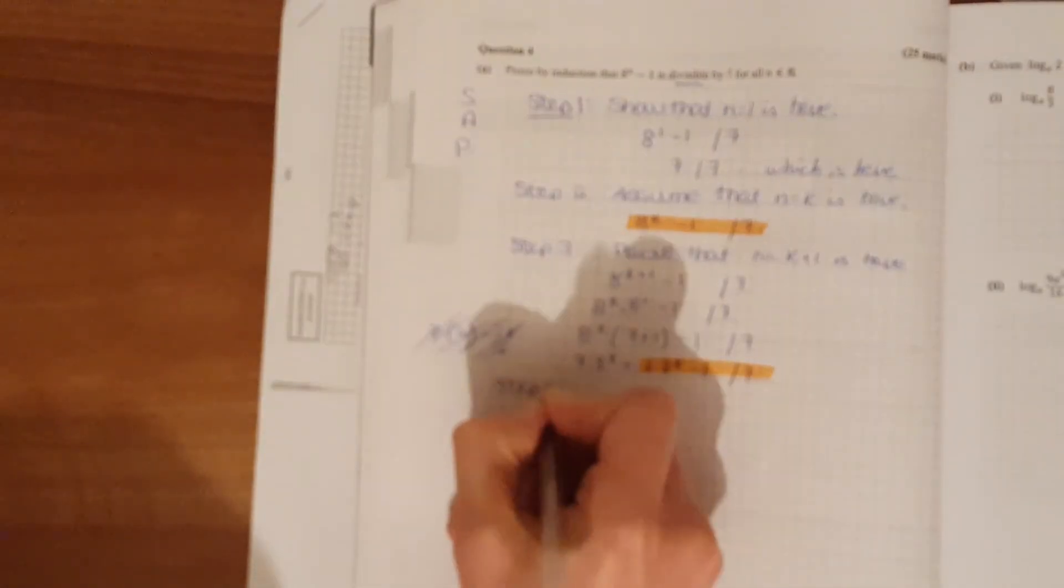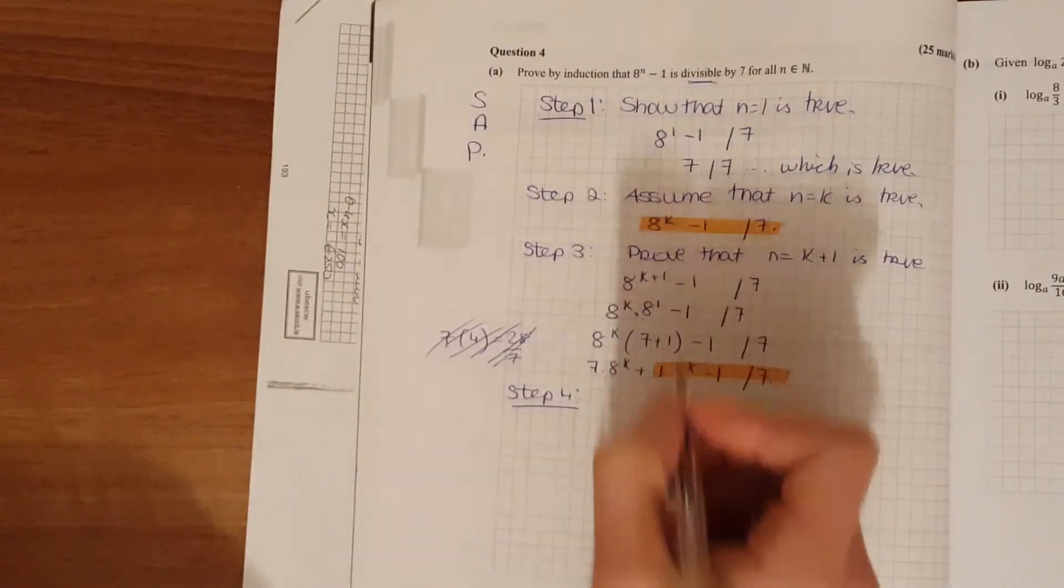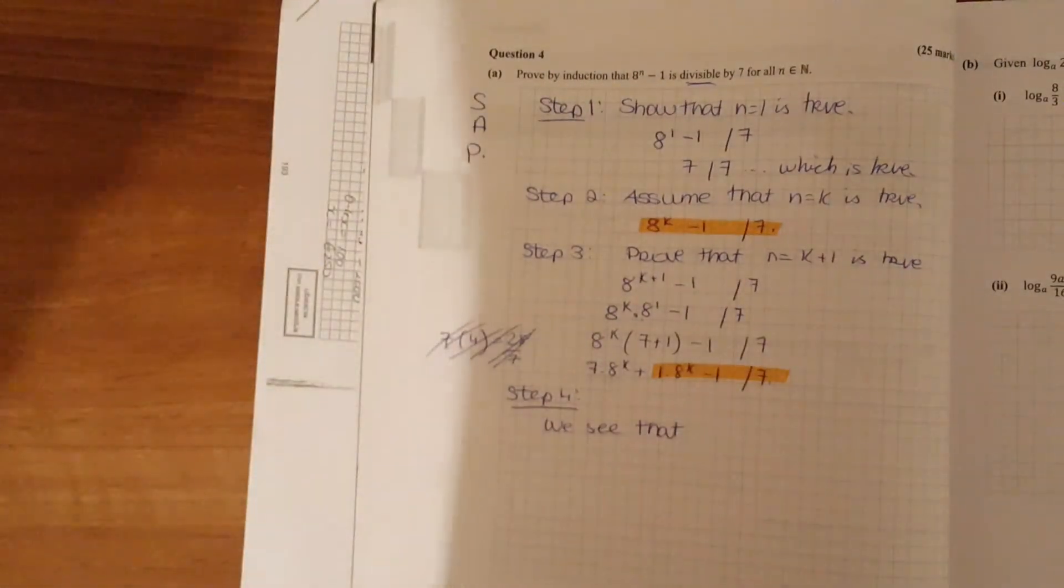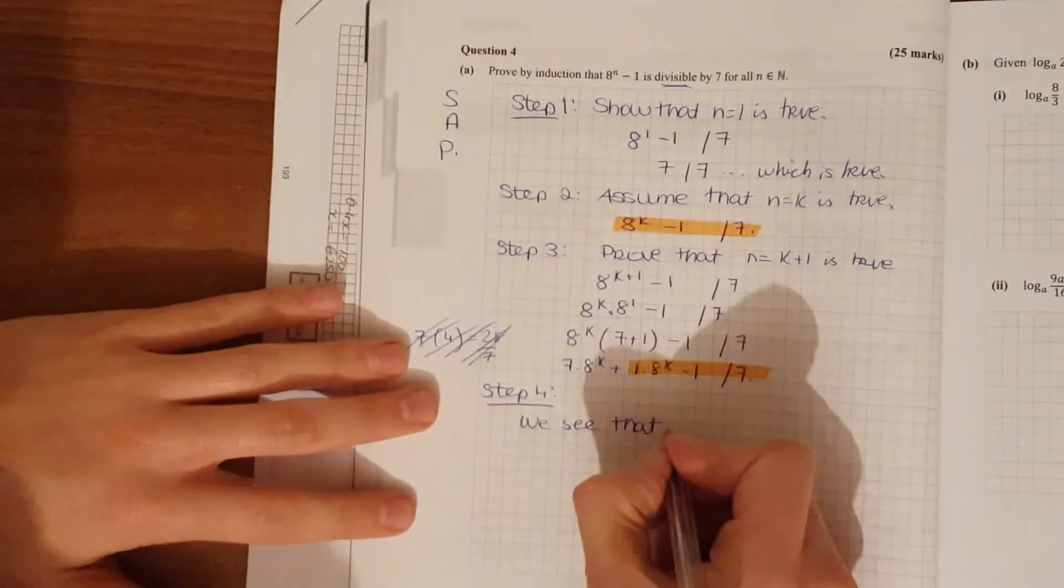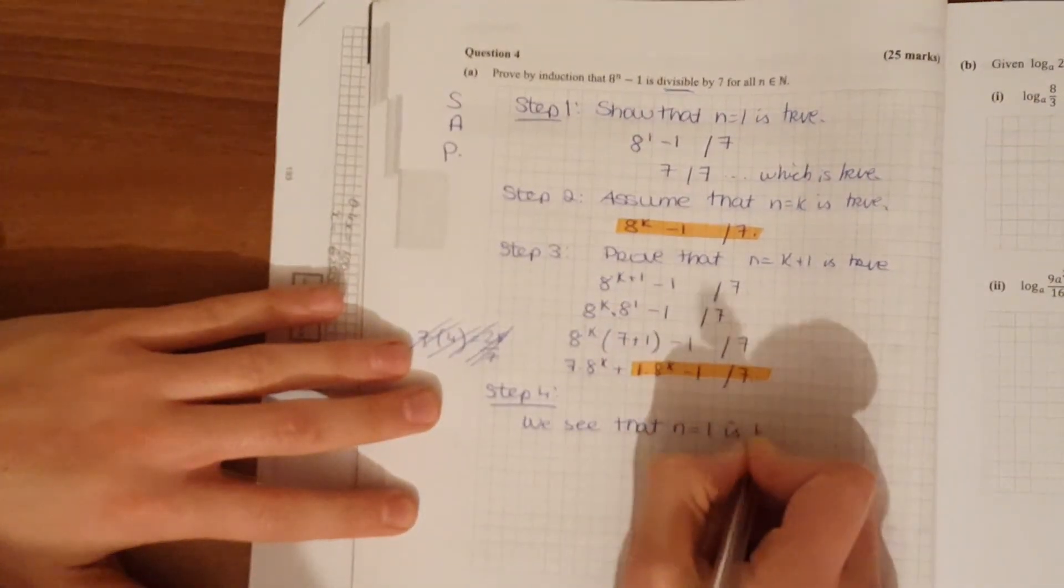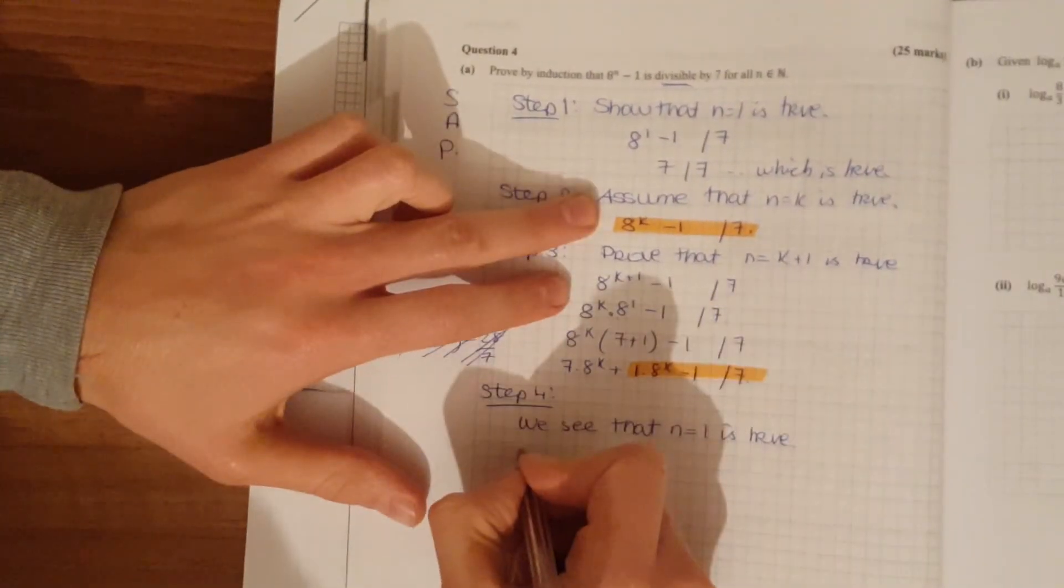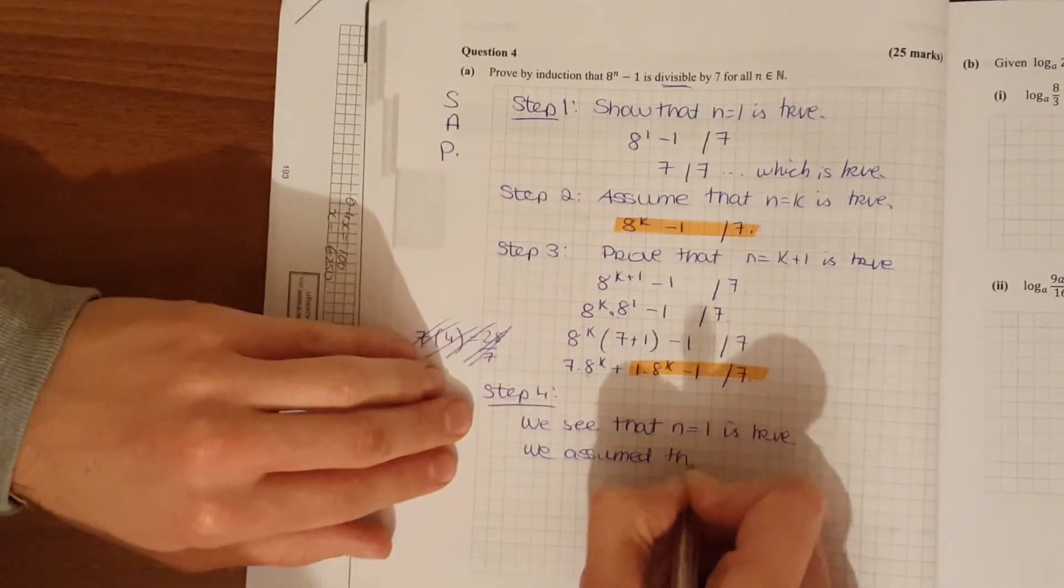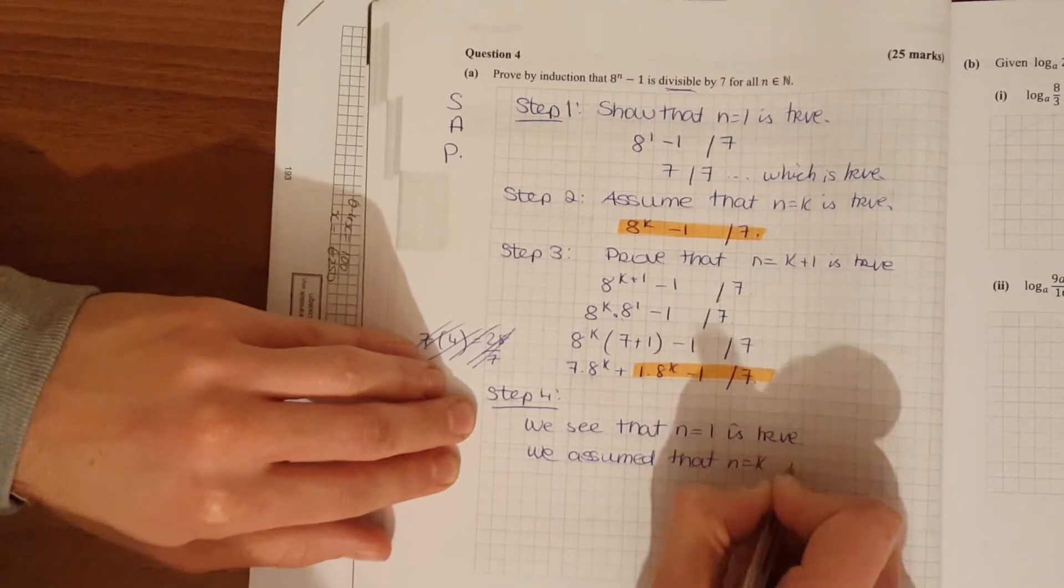So we write in a weak conclusion. Just going through each of these steps. We see that n is equal to 1 is true. We assume that n is equal to k is true.